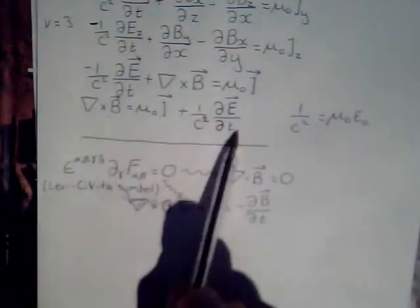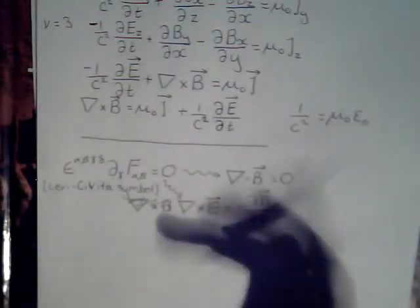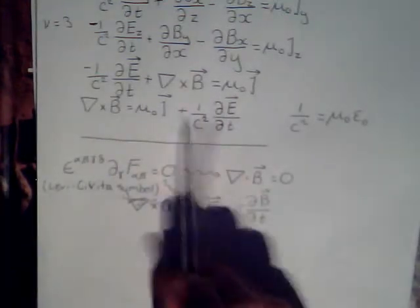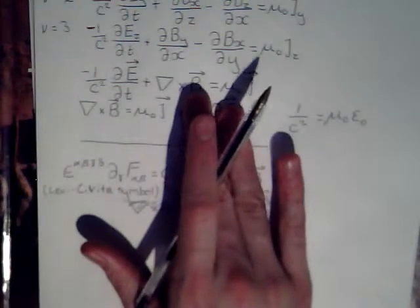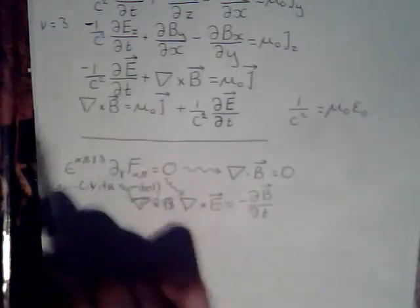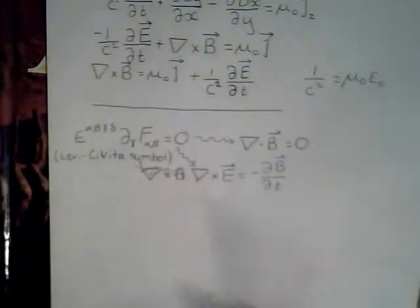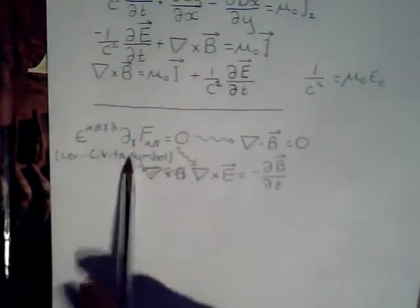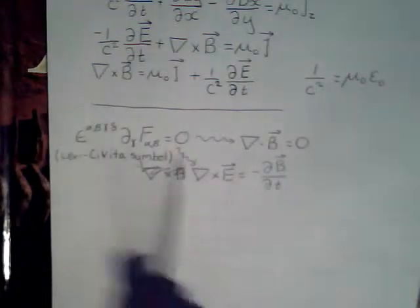Okay. A little bit of rearranging gives us this, which you should recognize as Ampere's law with Maxwell's corrections. This term here is the correction. If we ignored this, we could use the Kelvin Stokes theorem and get the integral form of Ampere's law.